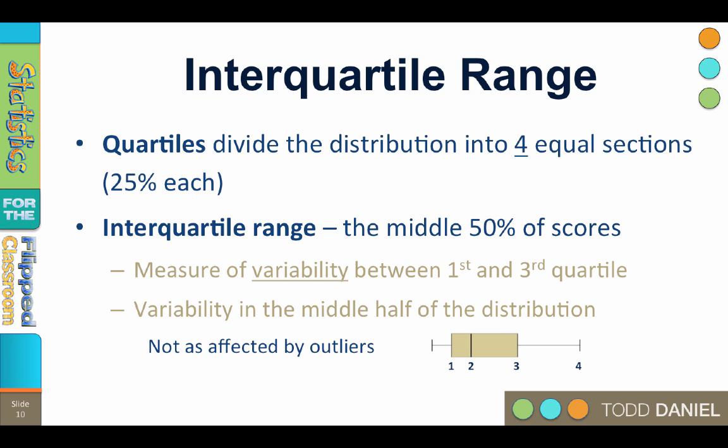It is a measure of the variability between the first and third quartile, or the middle 50% of scores. The biggest advantage of the interquartile range is that it is not affected by outliers, because it is describing the spread at the center of the data.